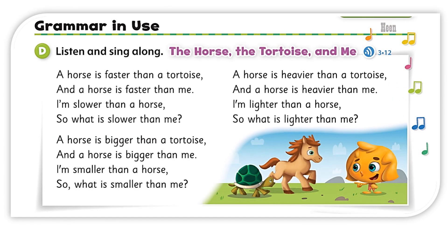Page 153. Grammar in use. Listen and sing along: 'The Horse, the Tortoise and Me.' A horse is faster than a tortoise and a horse is faster than me. I'm slower than a horse — so what is slower than me? A horse is bigger than a tortoise and a horse is bigger than me. I'm smaller than a horse — so what is smaller than me? A horse is heavier than a tortoise and a horse is heavier than me. I'm lighter than a horse — so what is lighter than me? I'm smaller than a tortoise!